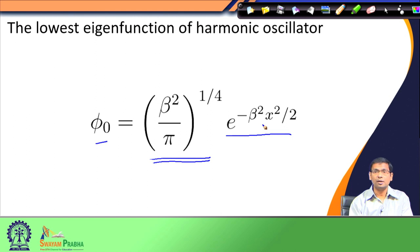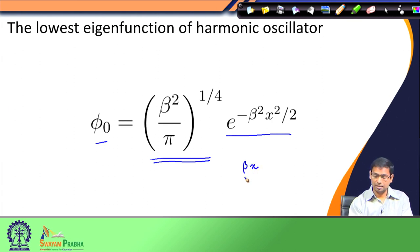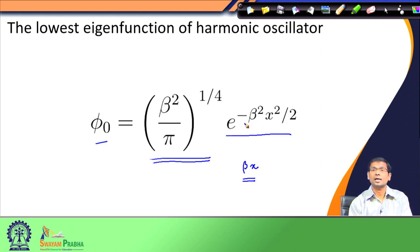If you find the dimension of beta, you would find that it has the dimension of length inverse. So if beta is length inverse and I multiply x with it, then this quantity becomes dimensionless. Therefore, beta squared x squared is actually a dimensionless quantity.